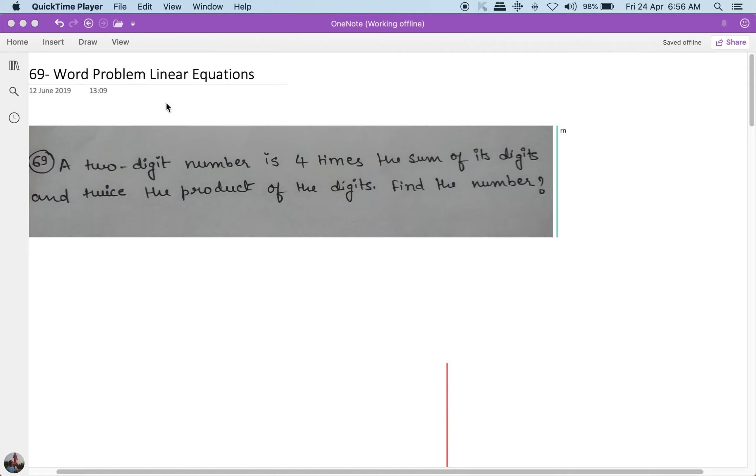The link to the entire playlist is down there in the description. Let's start solving this one. This question was asked in one of the previous year's final exam question papers. It says a two-digit number is four times the sum of its digits.